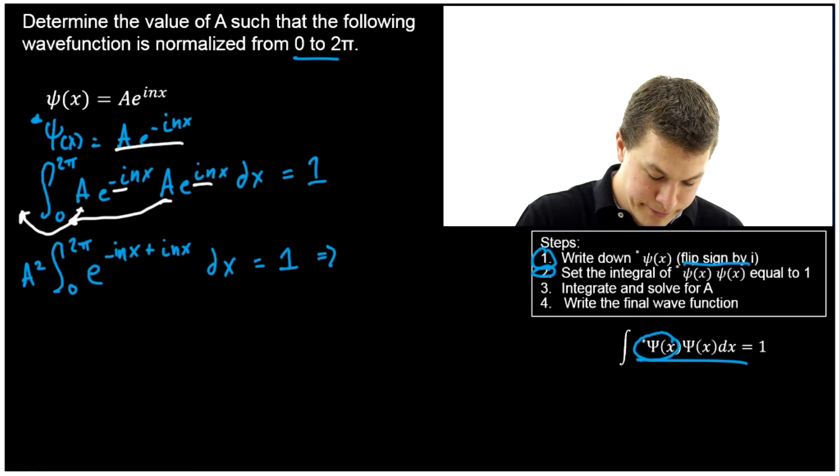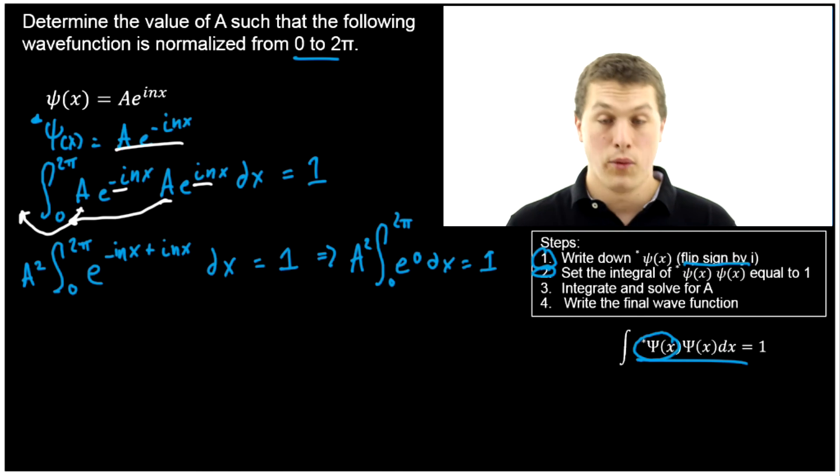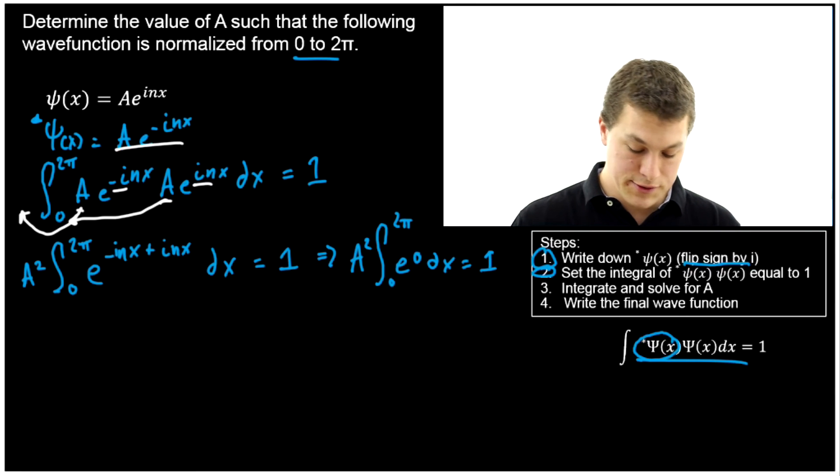Let's do blue. We're going to get A². Integral zero to 2π still, of e^0 dx equals one. What's e^0? That's one. Anything raised to the zero power is one.